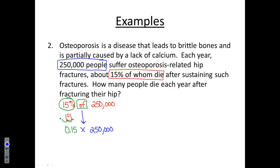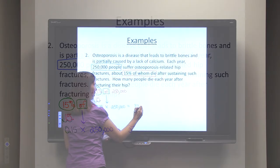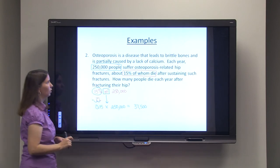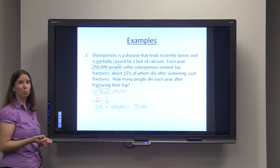So 0.15 times 250,000 will give us a total of 37,500 of those who suffer from a hip fracture that will die. So that sums up percents.